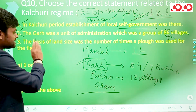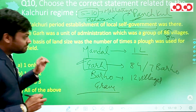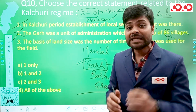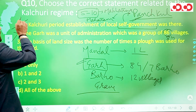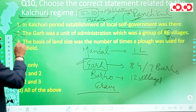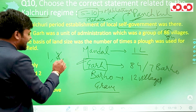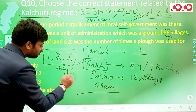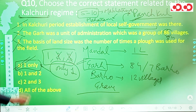Statement 3 says the basis of land size was the number of times a plow was used for the field. While correct in itself, this practice was actually used during the Maratha rule, not the Kulchuri regime. The question asks for statements correct only for the Kulchuri regime, so statement 3 is incorrect for this context. Only statement 1 is correct. Option A, which says only statement 1 is correct, is the answer for question 10.